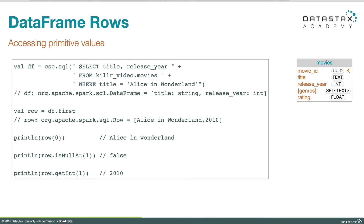Next, we'd like to access the second column — the release year at index one. Since this might be null, we first check using isNull at index one. It turns out it's not null, so we proceed to get the int at index one, and we see Alice in Wonderland was released in 2010. That typed getter approach, like getInt, only works if the column has a predefined getter. For collection types — a list, set, or map in Cassandra — you'll need to get it by index and deal with the returned value, since Spark SQL doesn't define type-based getters for collections. The first approach is the most general; the second is more type-safe and self-documenting, so you have to make the trade-off.